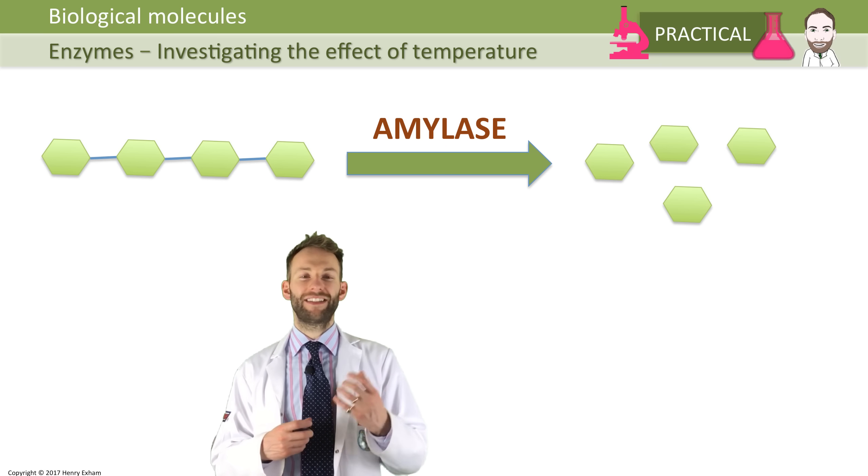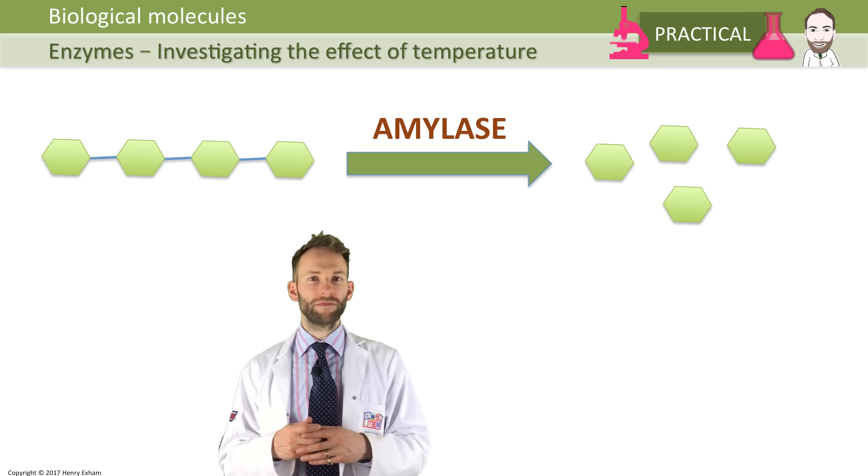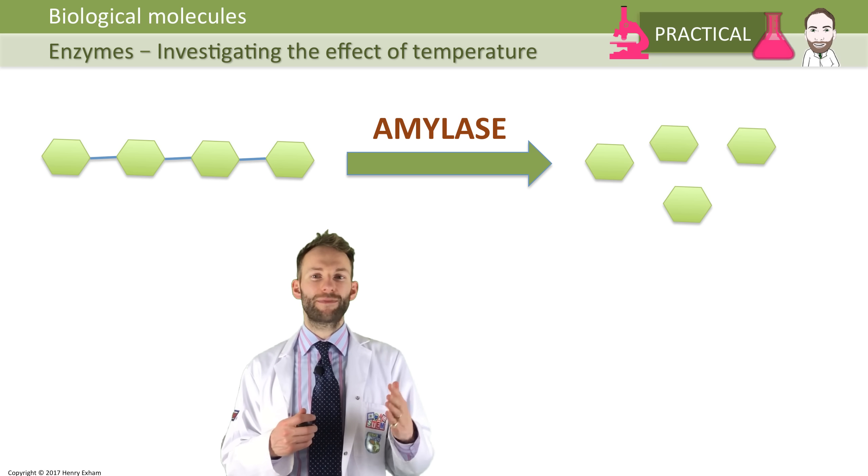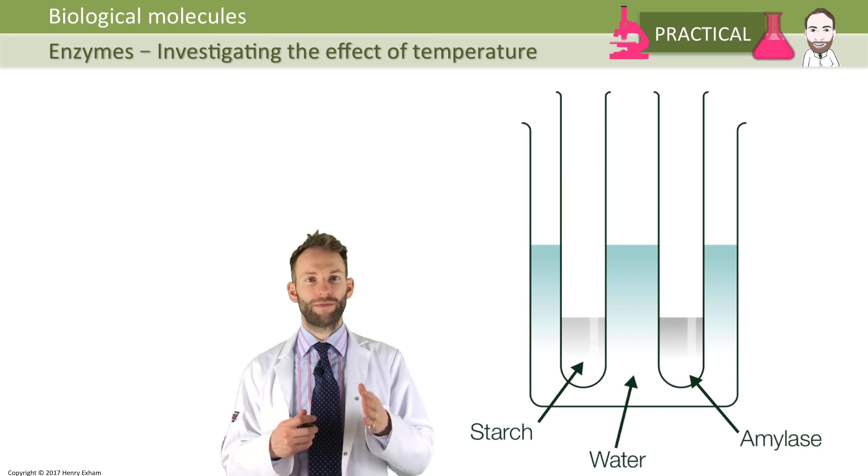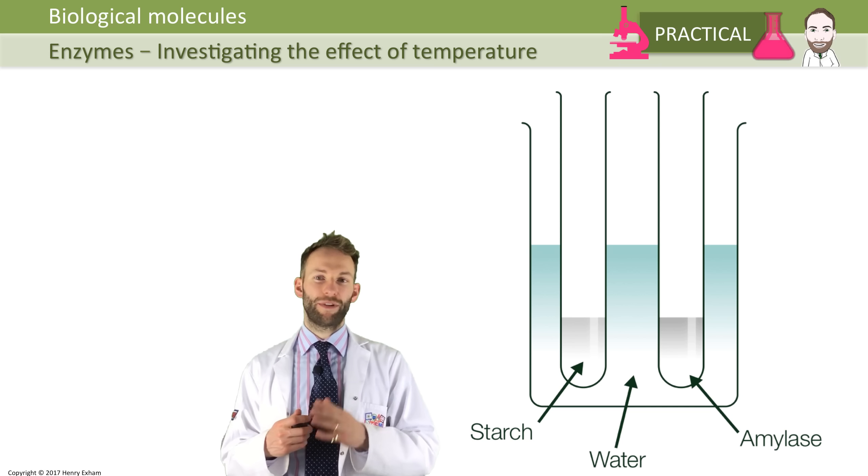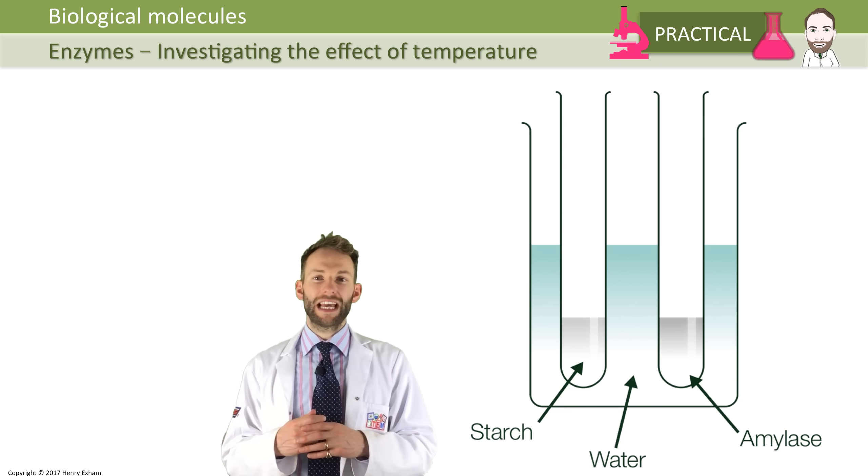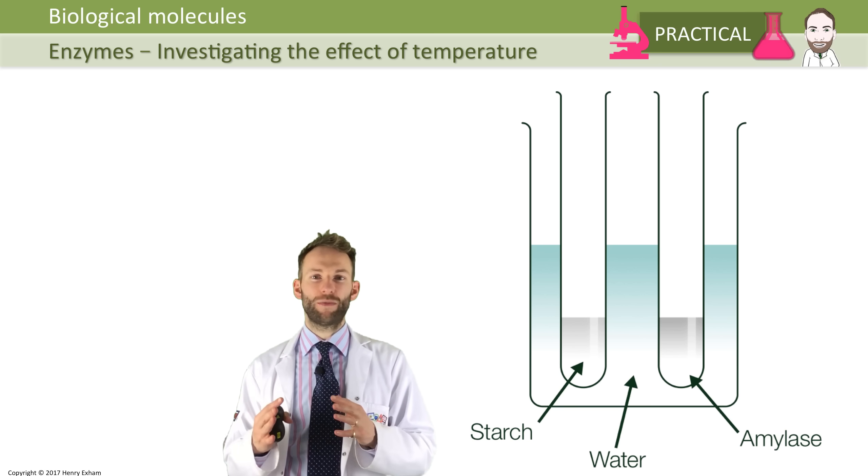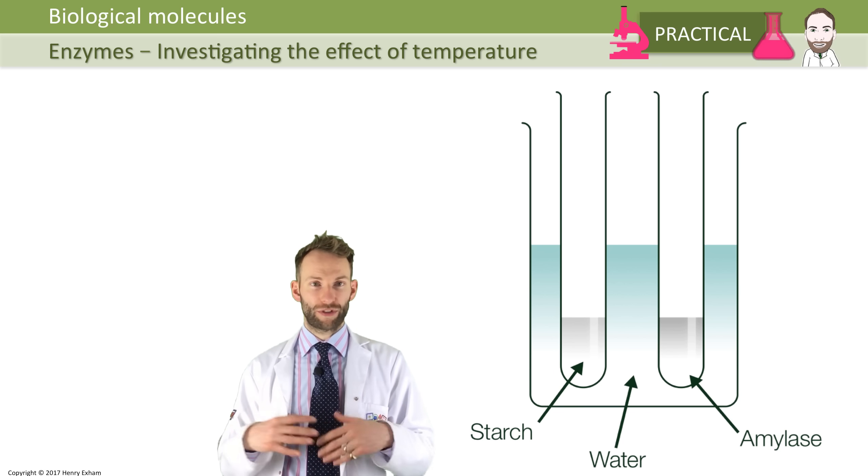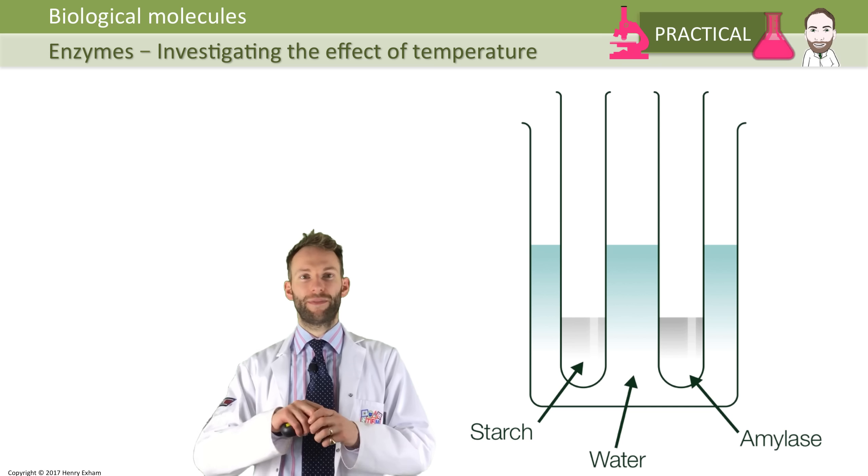We can then change the temperatures to see if that happens quicker or slower. What you would do is get some starch in a test tube - a specific volume, maybe 10 mL of a particular concentration - and you'd have a similar volume, maybe 10 mL of amylase, again of a very specific, pre-determined concentration. You would keep them in separate boiling tubes in a water bath for 10 minutes so that they get to the desired temperature you want to investigate.